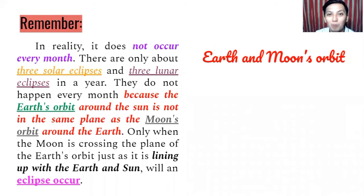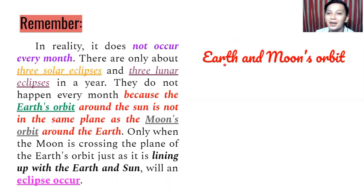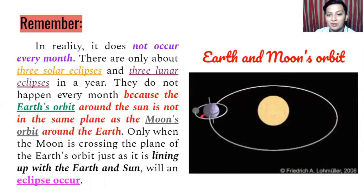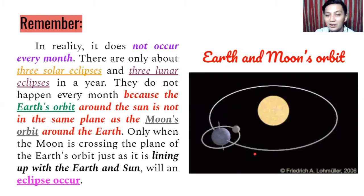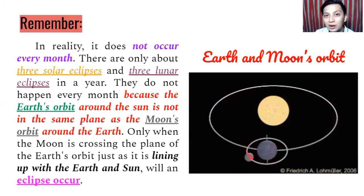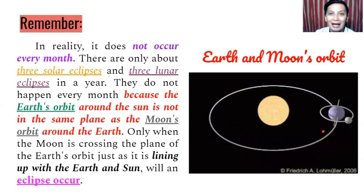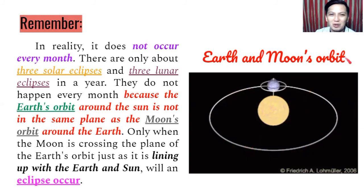When the moon, sun, and Earth align with each other, this is what an eclipse looks like. Looking at the Earth and the moon's orbit — as the Earth revolves around the sun, so does the moon revolve around the Earth. They do not have the same movement, which is why we do not have monthly eclipses.